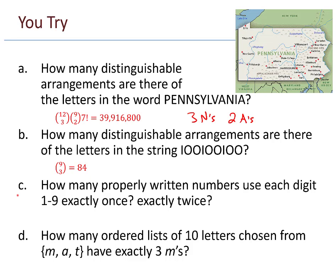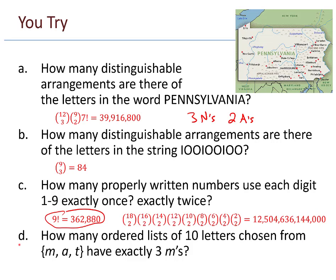Part c, how many properly written numbers use each digit 1 through 9 exactly once or exactly twice? Well, the exactly once is pretty straightforward. That's just 9 factorial. The exactly twice, it takes a bit to write out. I don't know that there's a shorter way to do this, but there it is anyway.